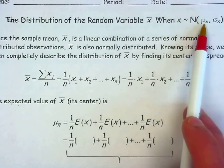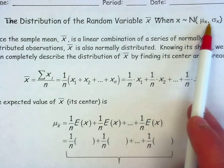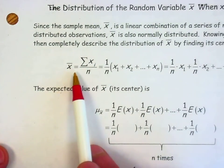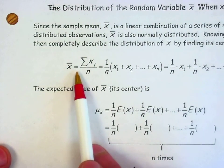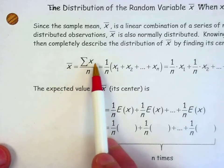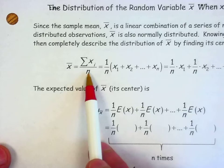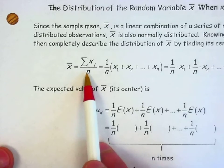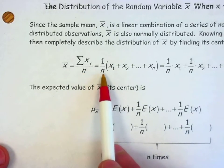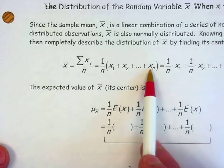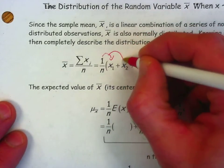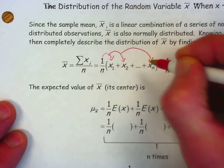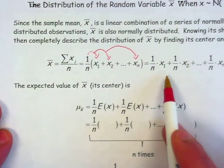Its mean is mu of x and the standard deviation is sigma x. A sample mean is a linear combination of a series of random variables — the sum of all of the x's divided by n. That's how you calculate a sample mean. That's like 1 over n times that sum, so you can distribute the 1 over n to all of these individual observations from our population.